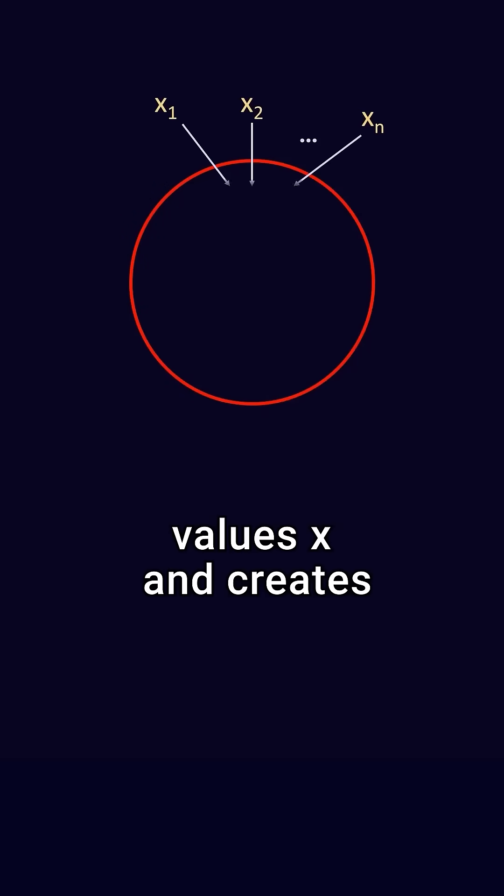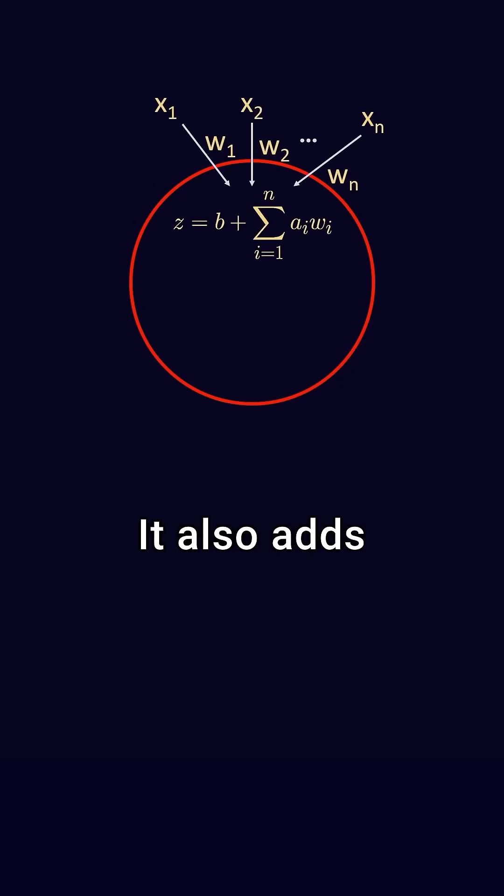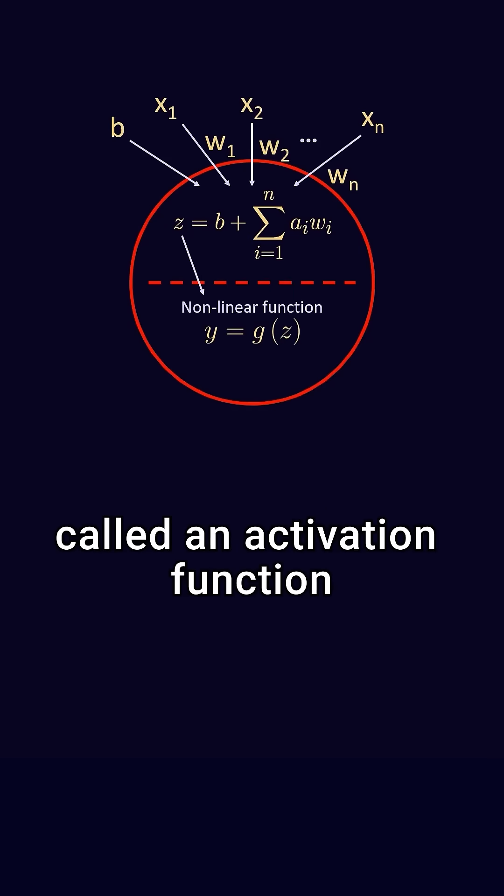A neuron or node takes in all input values x and creates a weighted sum of those inputs. It also adds a constant value or bias term b.